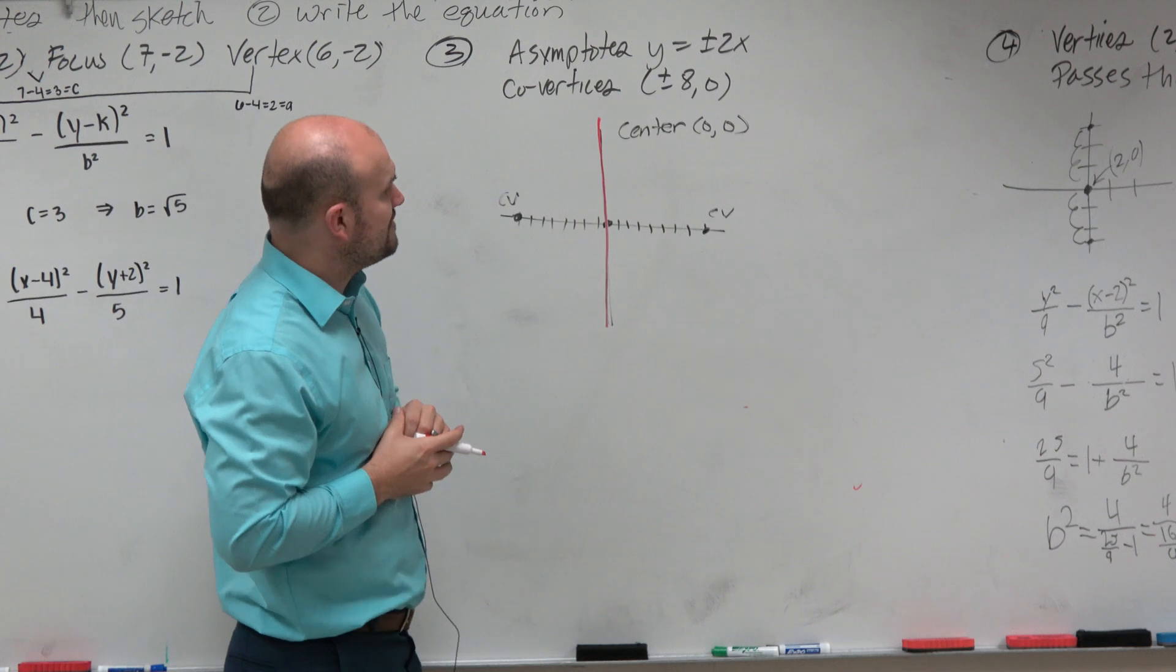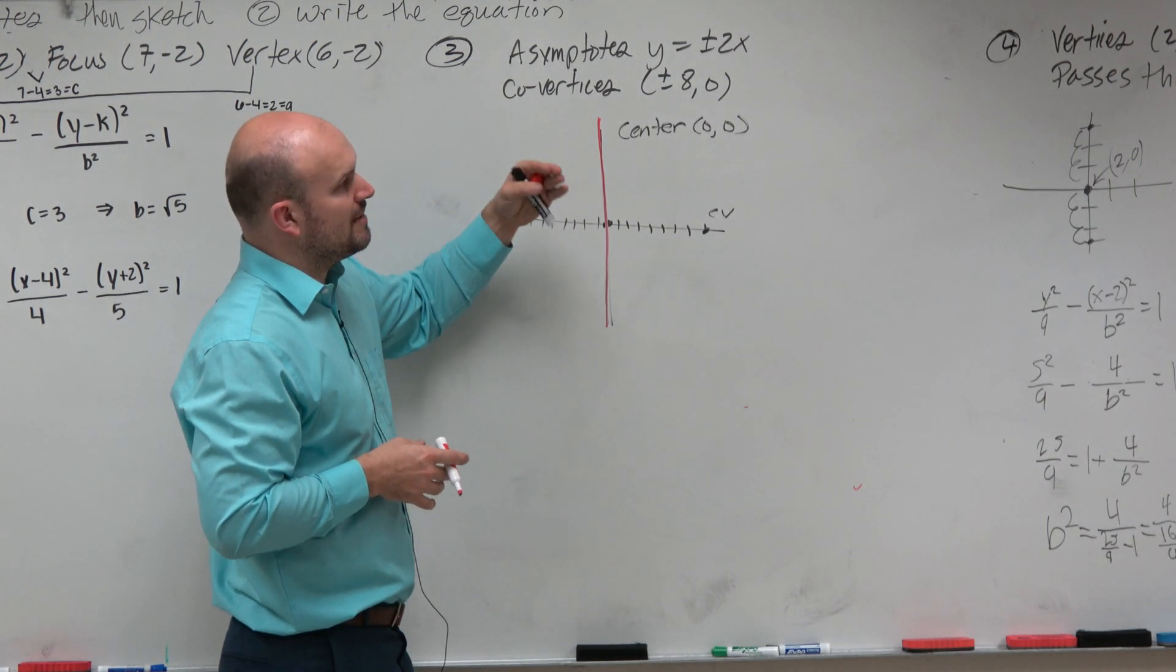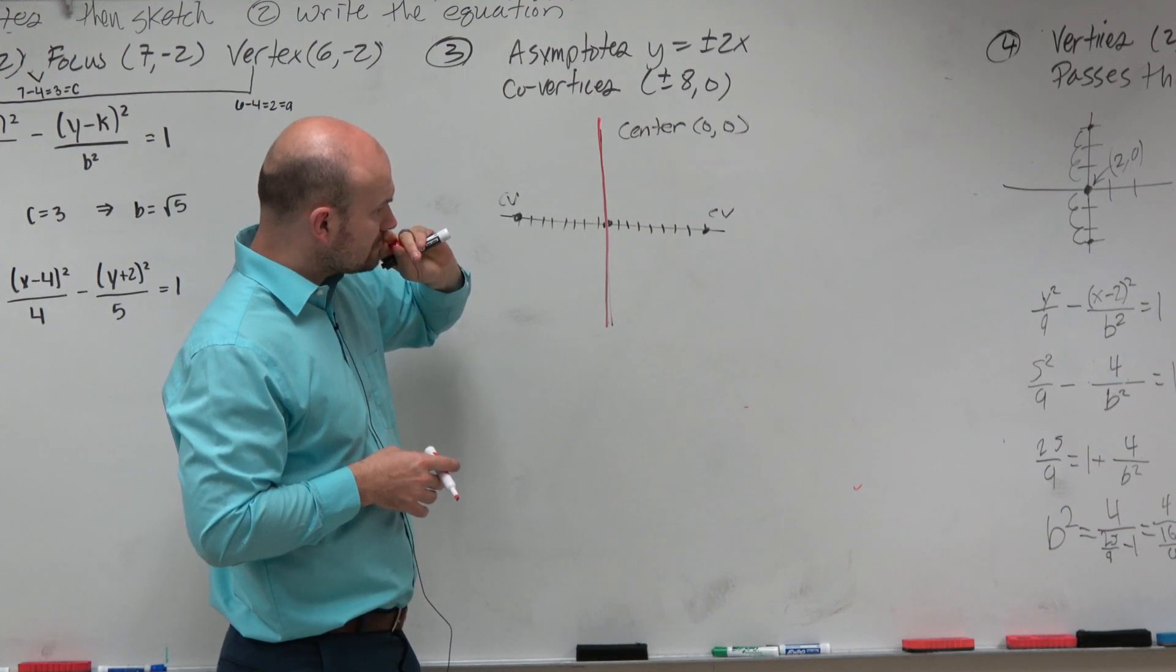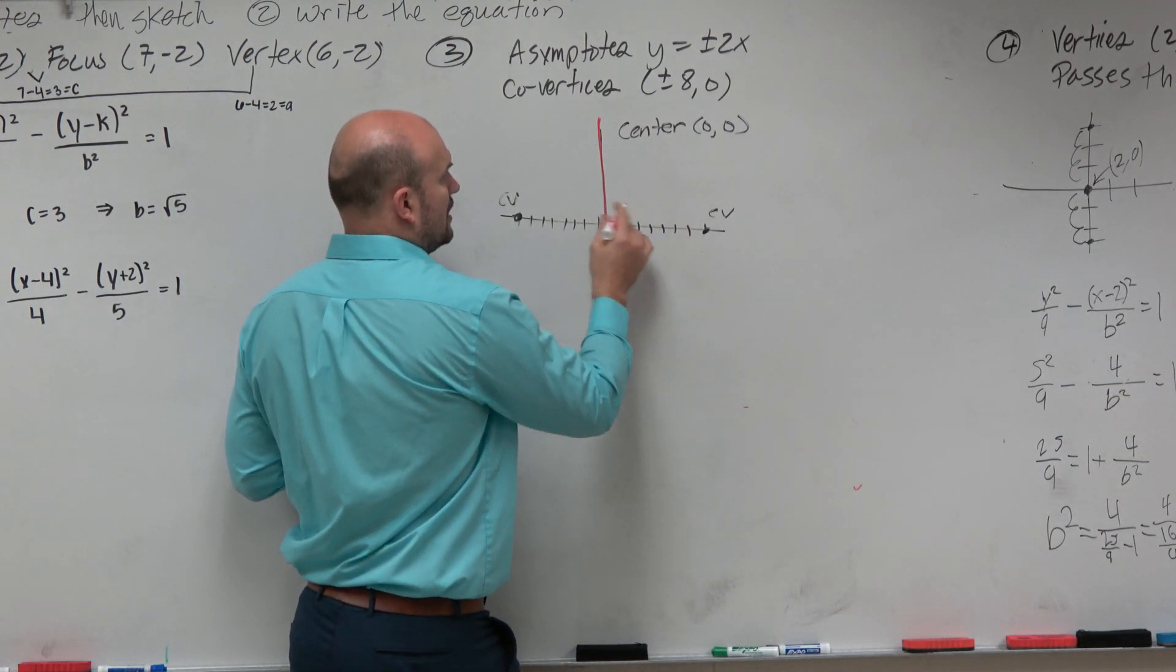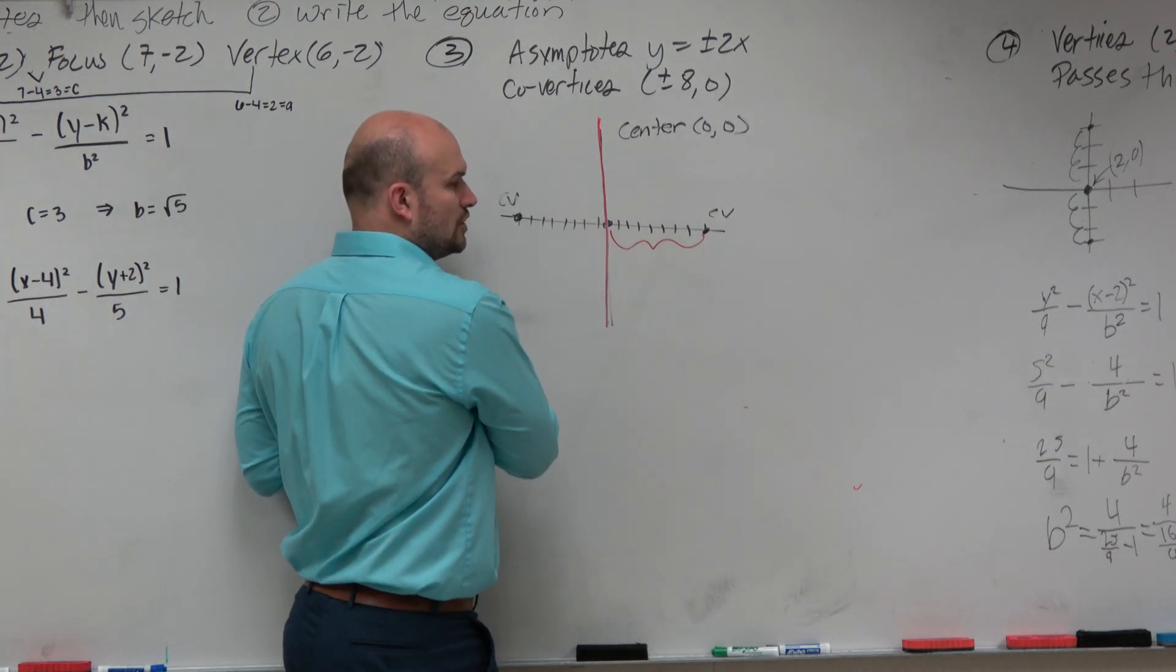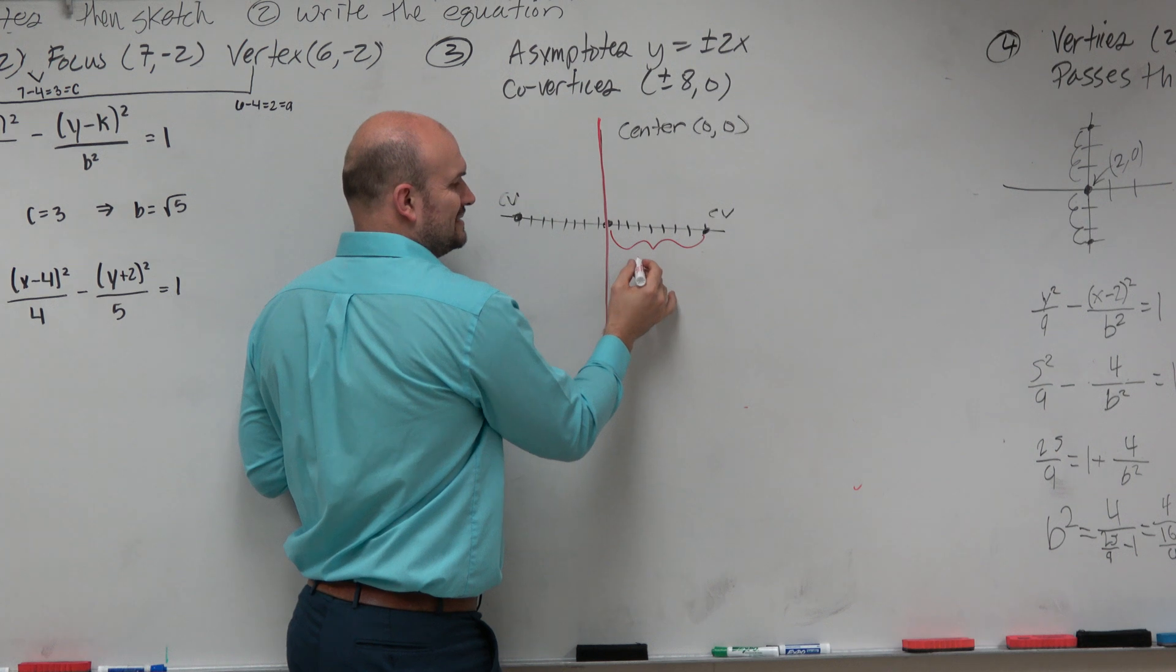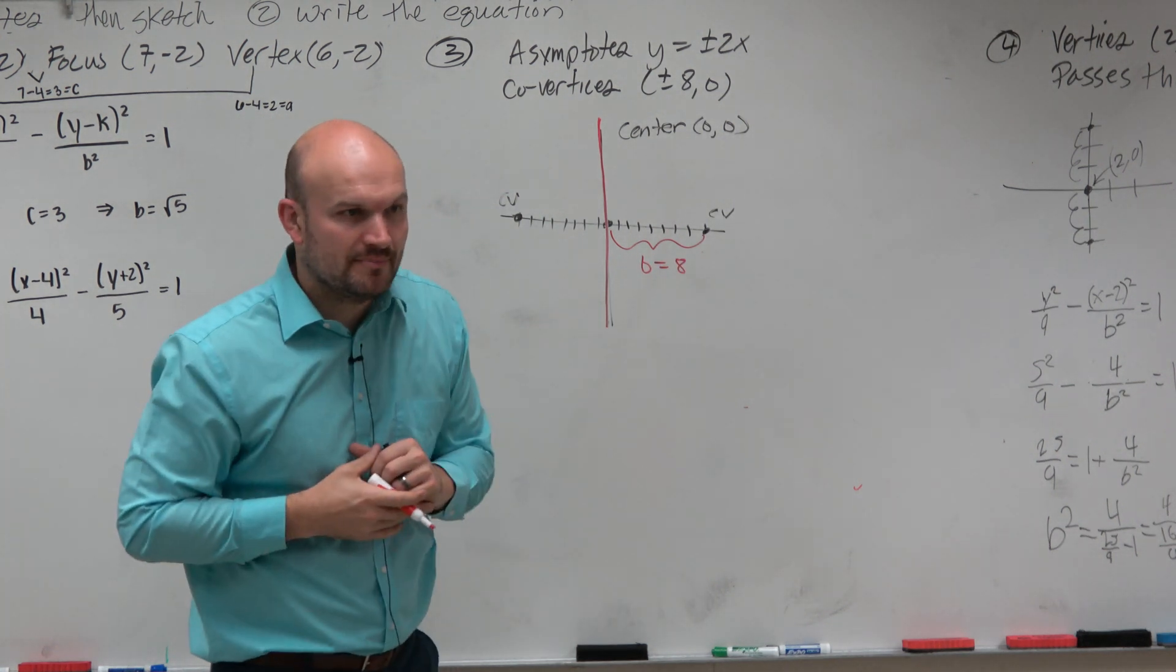That also means my vertices are going to be up and down, so it's vertical. So my equation is going to have a squared under my y. Now, the other thing is the distance from the center to your covertice is 8, but it's also equal to b. So now we know the value of b.